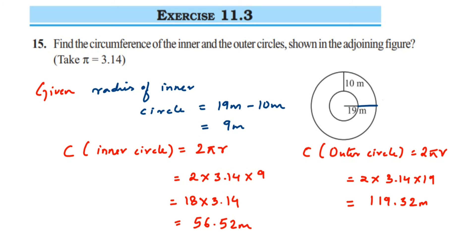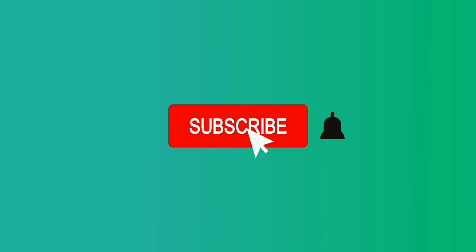So this is how we are going to get the circumference of both inner and outer circle. The only thing is you have to find out the radius from the given figure. I hope this question is clear. In case you have any further questions or doubts, you can drop a comment below. Thank you so much for watching.